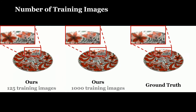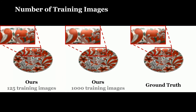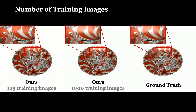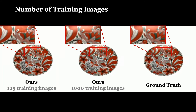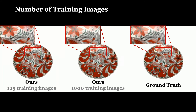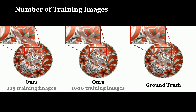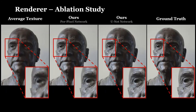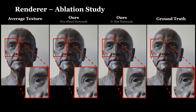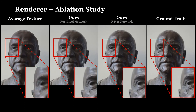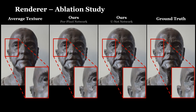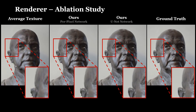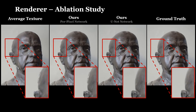The number of training images influences the re-rendering quality. In particular, view-dependent effects are not well captured with a reduced set of images. Here we show an ablation study of the rendering network. In contrast to a per-pixel network, our unit-like renderer is able to generate sharper results as well as compensate for errors in the geometry.